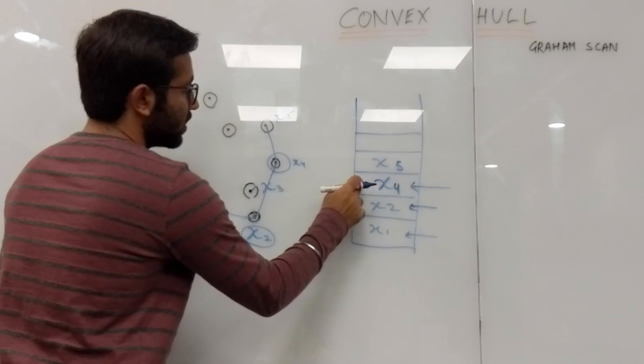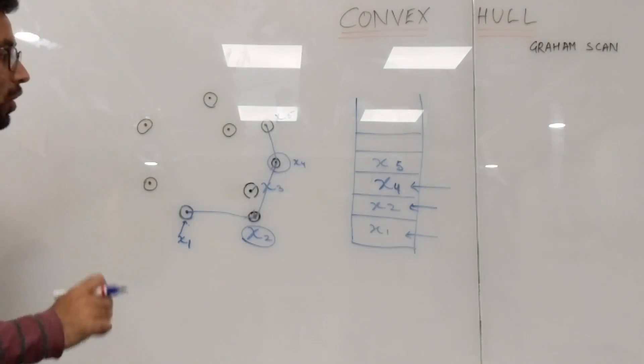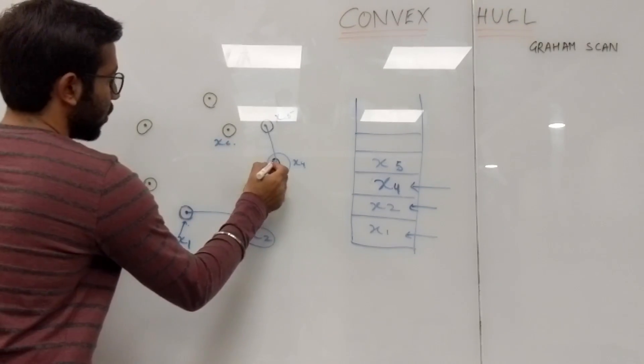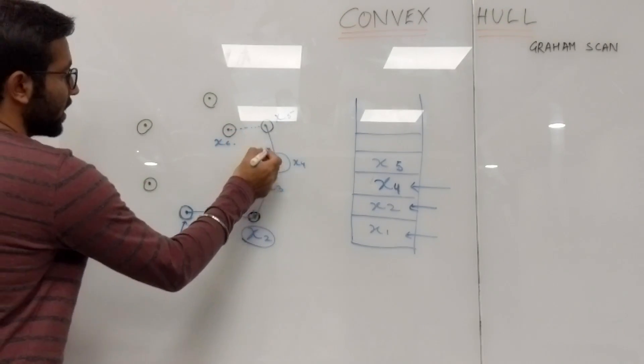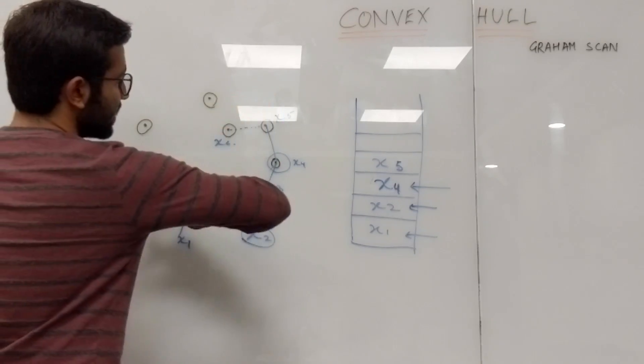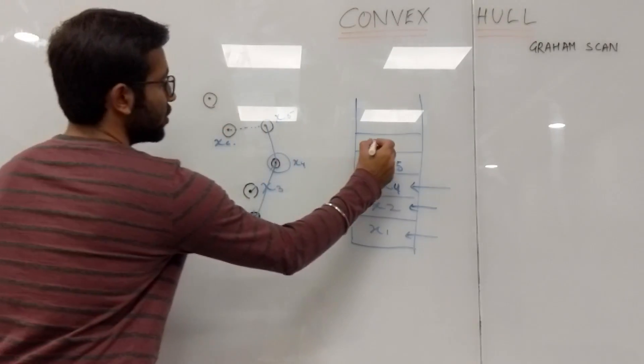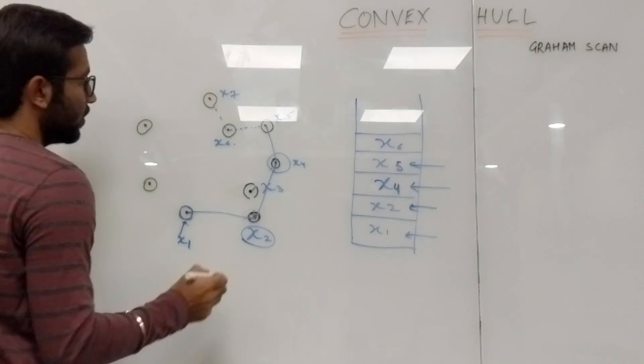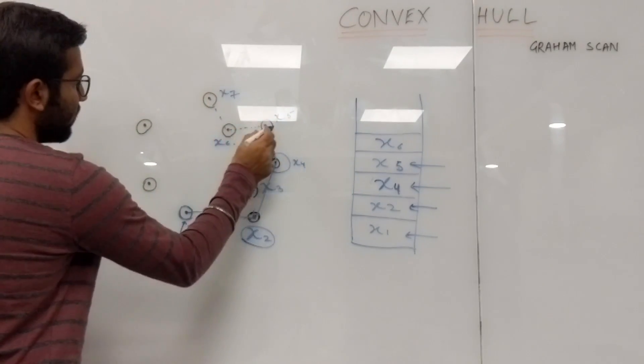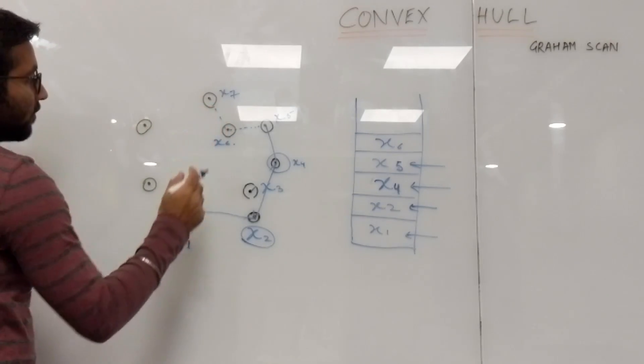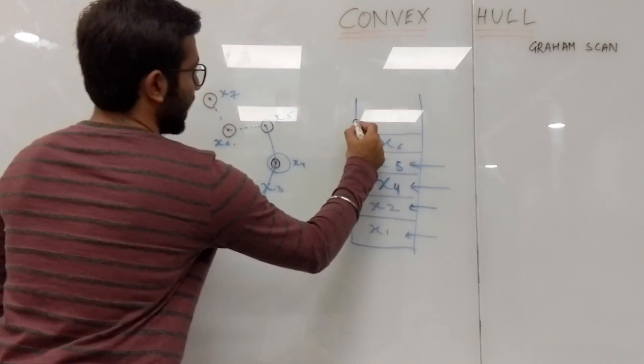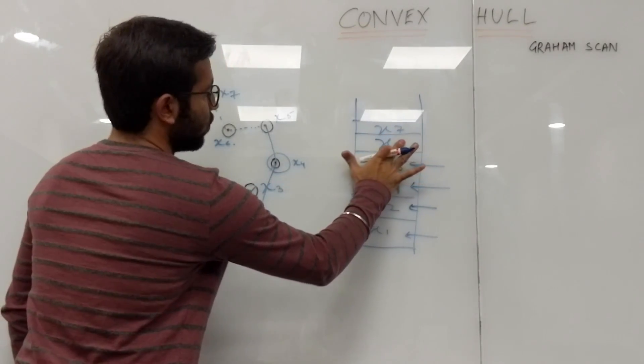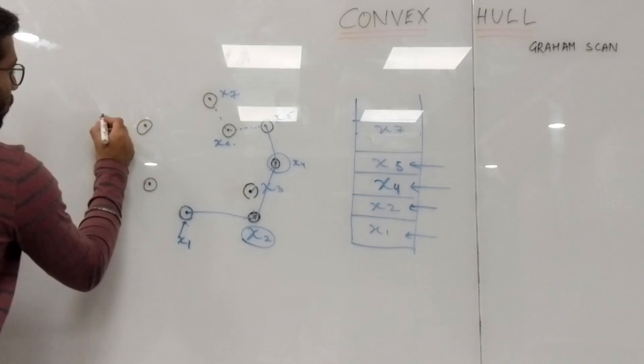Now we are sure that X4 is in there. We'll move to X6. Here, in order to move from X2 to X4 to X5, it again takes a left turn, and hence we can be sure that X5 is also in the stack. Now we'll move to X7. Here, in order to move from X5 to X6 and X6 to X7, we need to take a right turn instead of a left one, and hence we can be sure that X6 won't be there in the stack, so we can remove it.